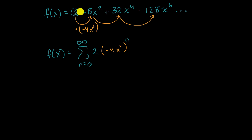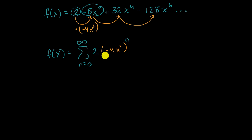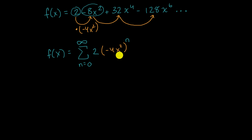When n equals one, we get two times negative four x squared, which is indeed the second term. So this works. Now, what is the sum of an infinite geometric series like this? It's going to be a finite value assuming the absolute value of the common ratio is less than one.